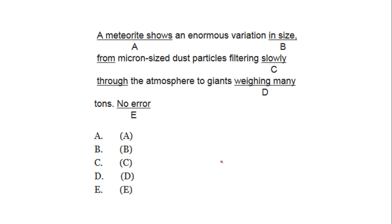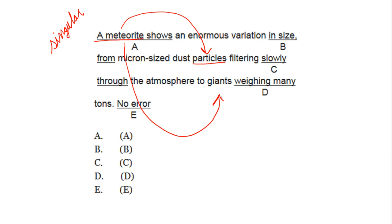'A meteorite shows an enormous variation in size from micron-sized dust particles filtering slowly through the atmosphere to giants weighing many tons.' I want to bring your attention to the noun 'meteorite,' which is singular. But what does 'a meteorite' refer to? It refers to two other nouns in this sentence — 'particles' and 'giants' — both of which are plural. So 'a meteorite' does not agree in number with 'particles' and 'giants.'